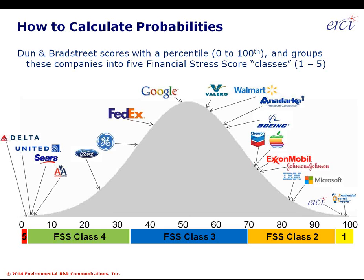To give a sense of where household names fall: airlines are unfortunately clustered on the low end, having all been through bankruptcy recently. Healthier companies in the middle of the curve include Google, Valero, Walmart, Anadarko, and Boeing. Blue chip companies in financial stress score class two include Chevron, Apple, ExxonMobil, Johnson & Johnson, IBM, and Microsoft. On the top end are privately held companies — my own firm is in the 95th percentile, and a privately held uniform company in Irvine, California scores at the 98th percentile.